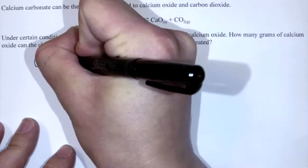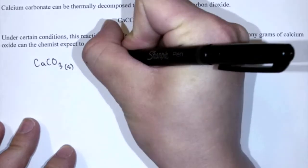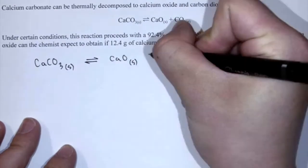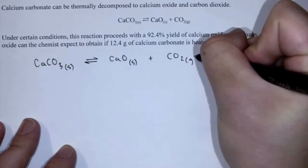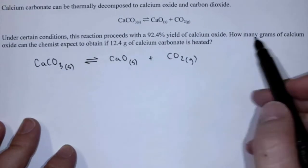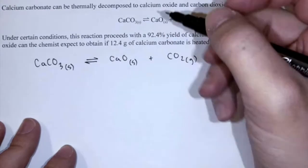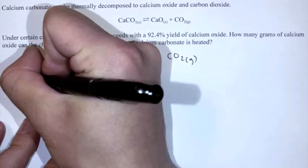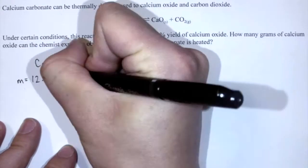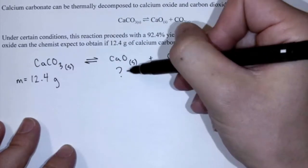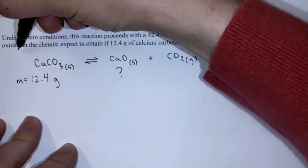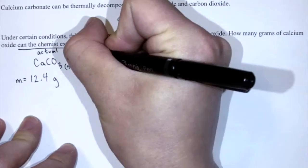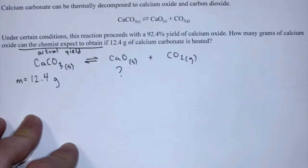I'm going to rewrite the equation: calcium carbonate turning into calcium oxide and carbon dioxide. The question asks how many grams of calcium oxide can the chemist expect to obtain if 12.4 grams of calcium carbonate is heated. So if I start with 12.4 grams, how much of this can I expect to obtain? This is asking for an actual yield — how much can you reasonably expect to obtain.